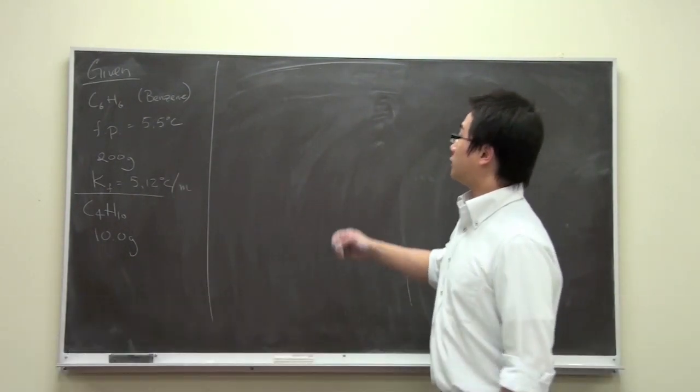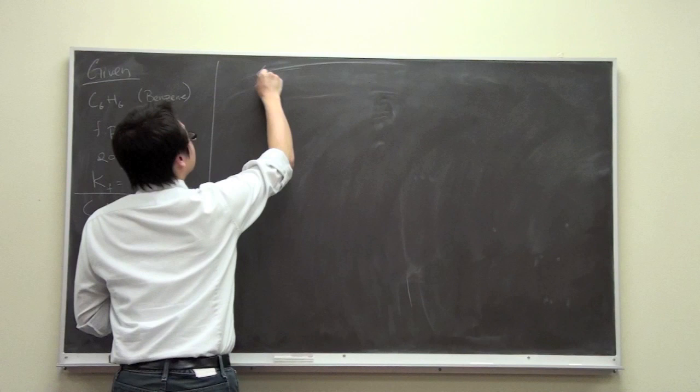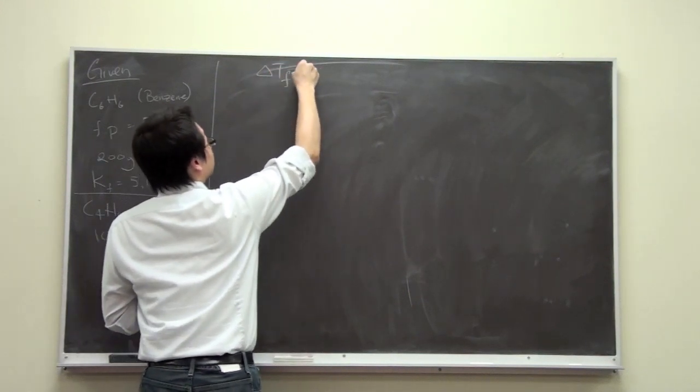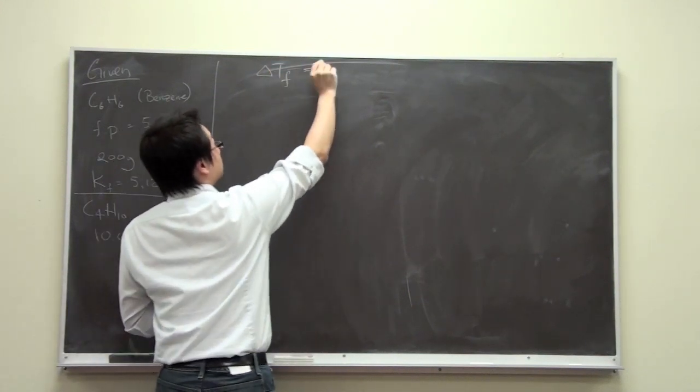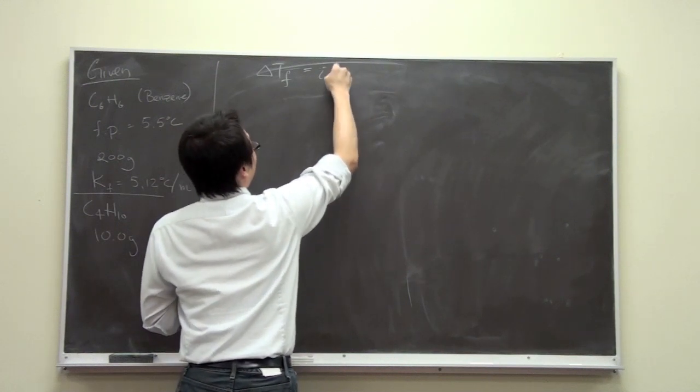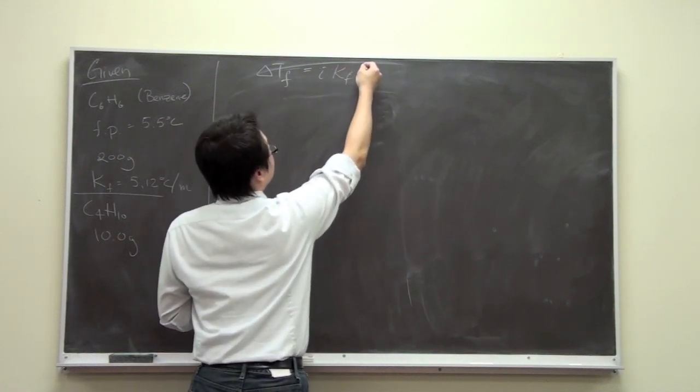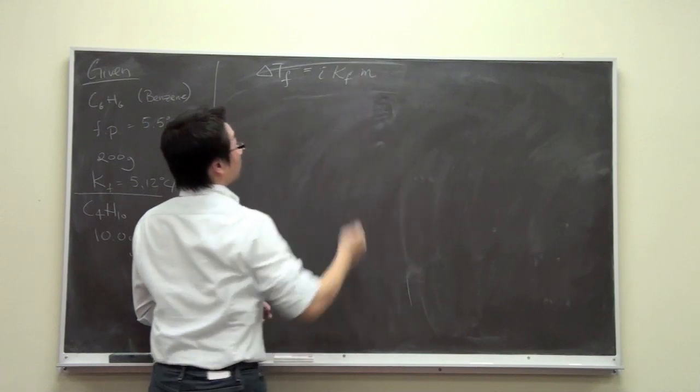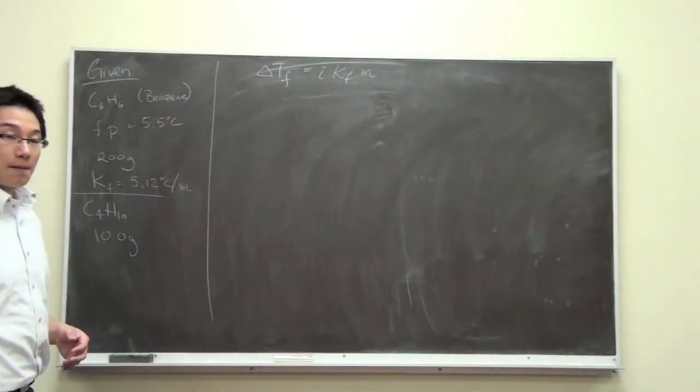Let's write down the equation that we will use first. The change of temperature of the freezing point is equal to the van't Hoff factor times the freezing point constant and the molality.